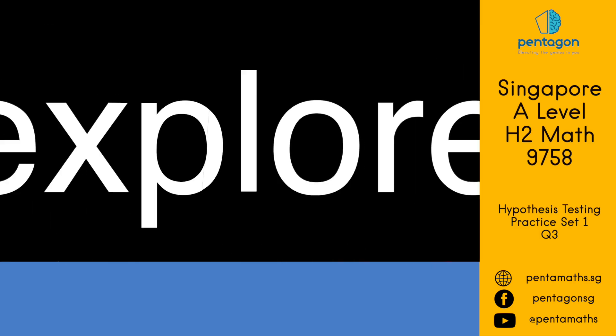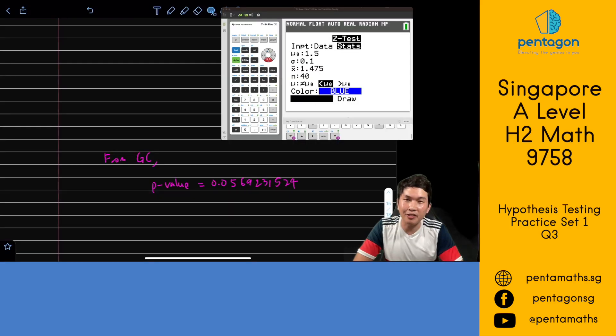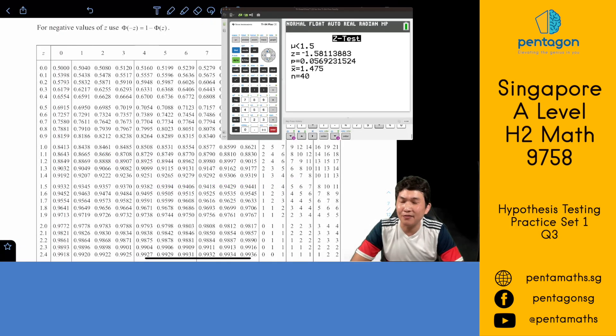Let's take a look at step 3b. How can we conduct the same test using our graphing calculator? Welcome back to step 3b. These are the values you should be putting into your graphing calculator under z test. When you press enter, this is what you should get, the p-value and also the z-value. I'm going to show you how to get the p-value from MF26. So just in case, for whatever reason you do not have your graphing calculator with you, you could still work out what the p-value is.